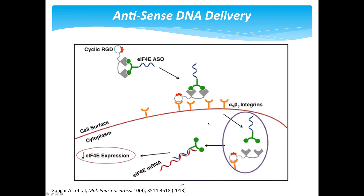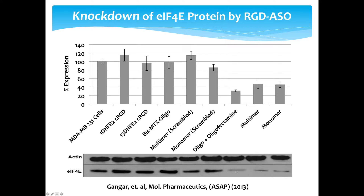If delivery is occurring, we should see a loss of eIF4E protein expression. And indeed, in western blot results, when we've added our oligonucleotide nano rings, we see a clear loss of protein compared to untreated controls — much less protein in the cell, indicating we've targeted the mRNA and reduced expression. This result is comparable to lipofectamine, which can't be used in the clinic, suggesting our method could be a viable way to deliver nucleic acids like DNA and RNA.